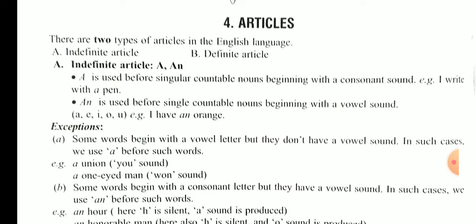तो ये तो आपने commonly study किया है। But some words begin with a vowel letter but they don't have a vowel sound. लेकिन कुछ words ऐसे होते हैं जो शुरू तो हमारे vowel alphabet से होते हैं, but उनका जो sound होता है जब हम उसको बोलते हैं तो वो sound vowel का नहीं आता है। In such cases, उस case के अंदर हम उसके साथ use करेंगे 'a'। तो ये बहुत जरूरी है आपको हर एक word को बोलकर देखना है। अगर वो start होता है हमारे vowel sound से तो हमने वहां पर 'an' use करना है।